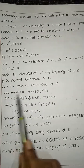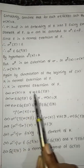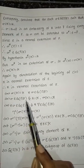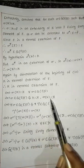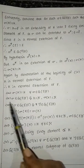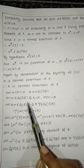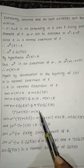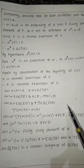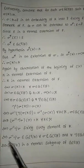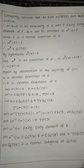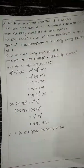So the condition is: K is a normal extension of F if and only if σ(K) = K for all σ in G(E/F). For all σ in G(E/F) and for all τ in G(E/K), τ(σ(K)) = σ(K). By processing this we get G(E/K) is a normal subgroup of G(E/F). Hence the proof of the fourth part is complete.